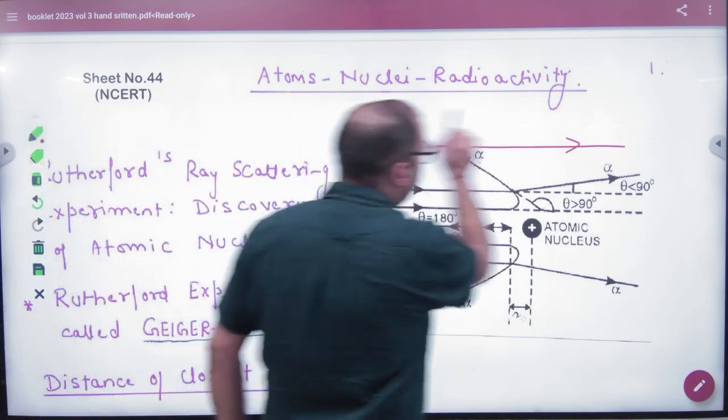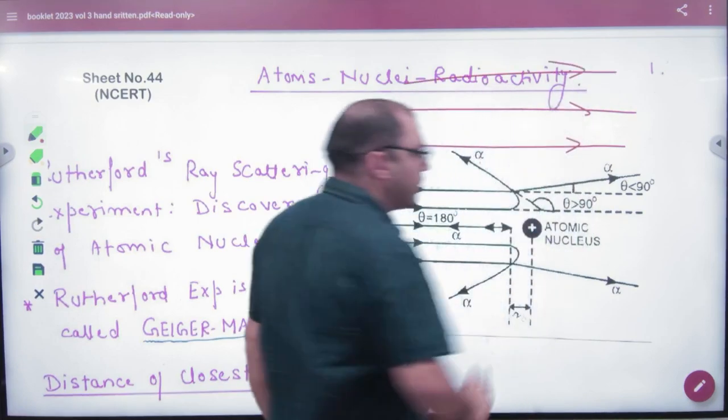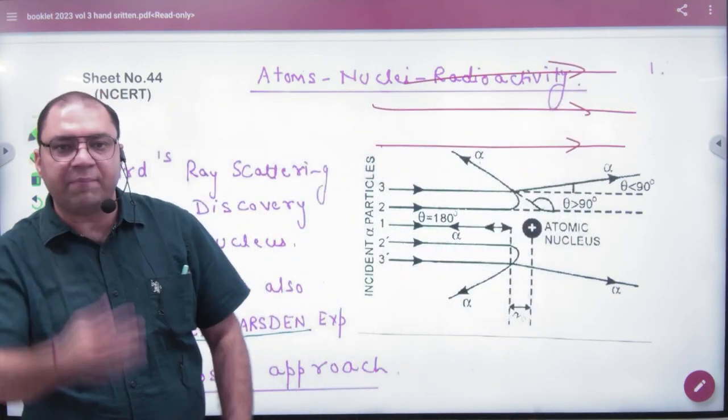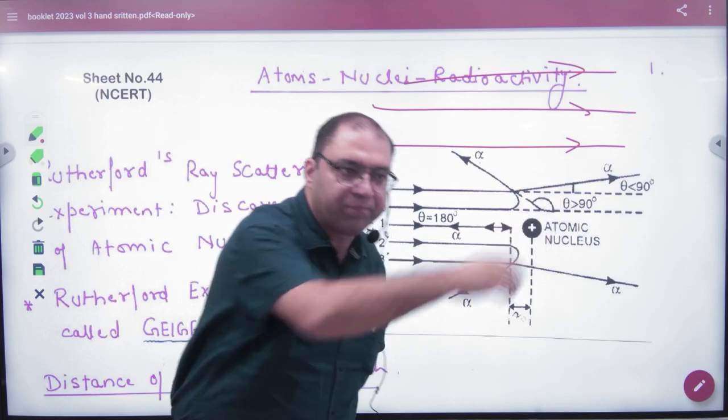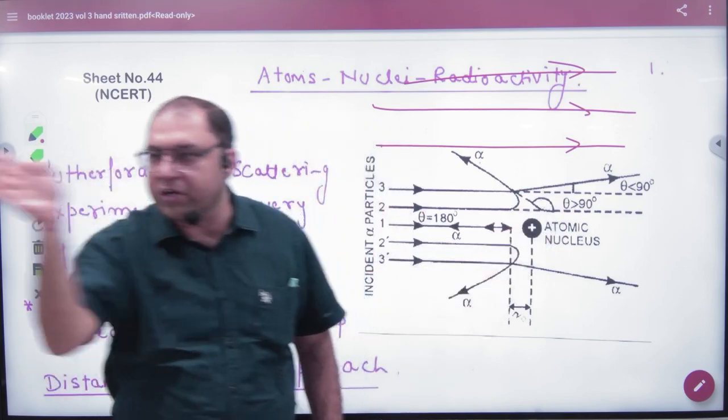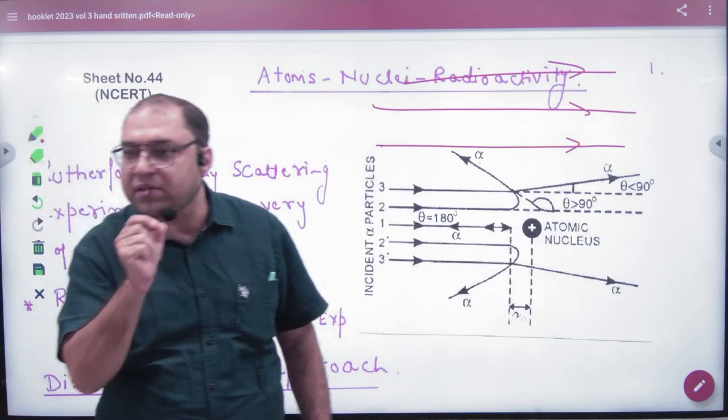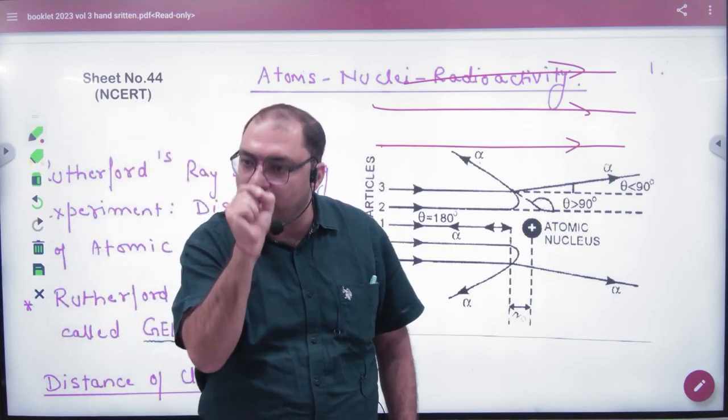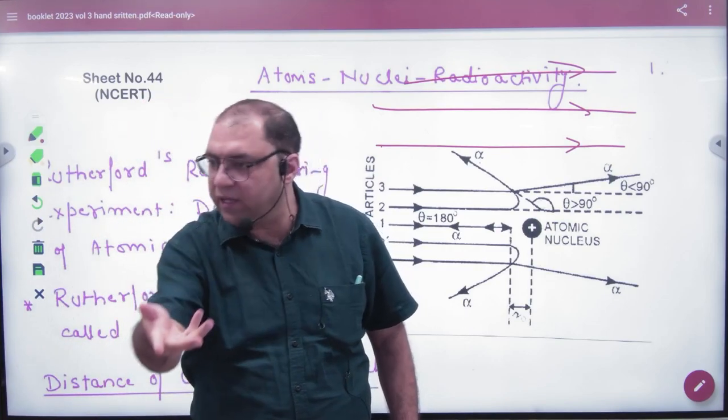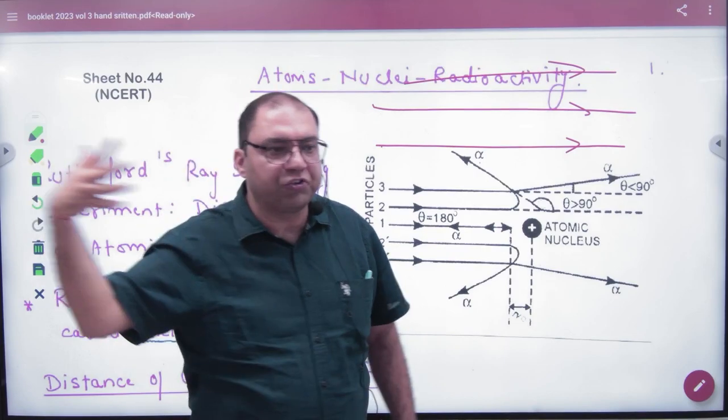And alpha particles go straight, straight, straight. So imagine you have many alpha particles, very small particles which have strong deflection because the nucleus is very small. So how much alpha particles go straight.